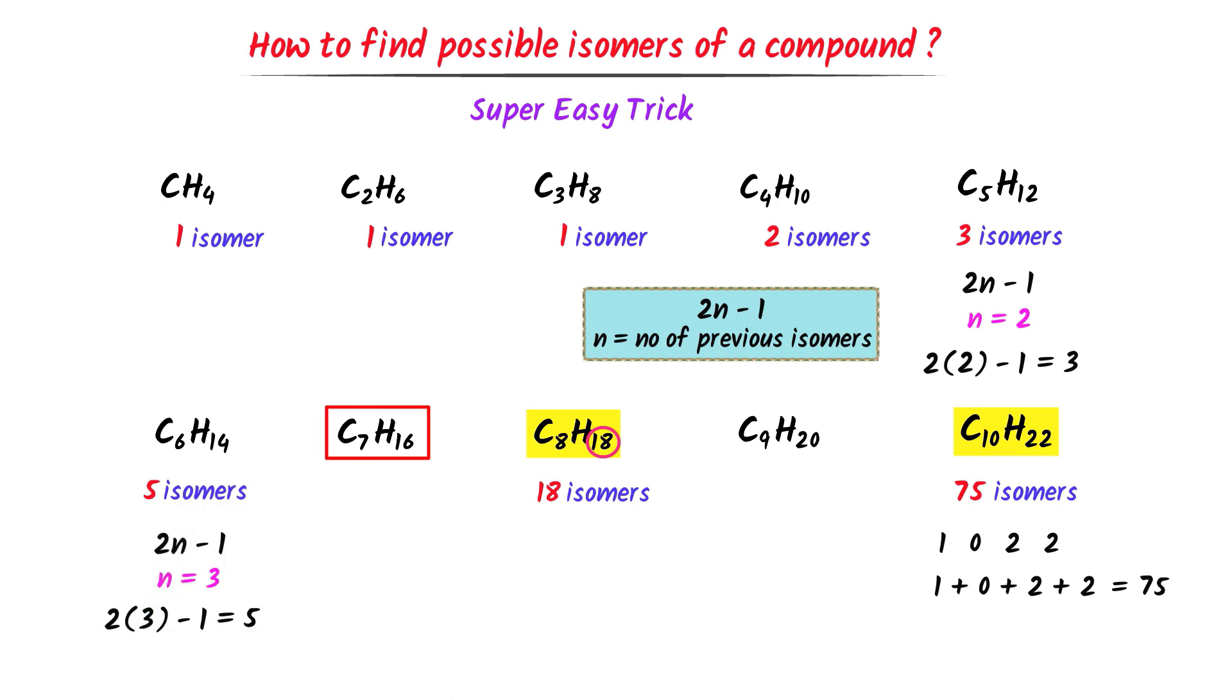In case of heptane, I use the formula 2n-1. The number of previous isomers is 5. Hence, n is equal to 5. I write, 2 times 5 minus 1 is equal to 9. Thus, heptane has 9 isomers.